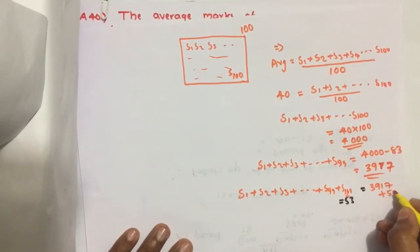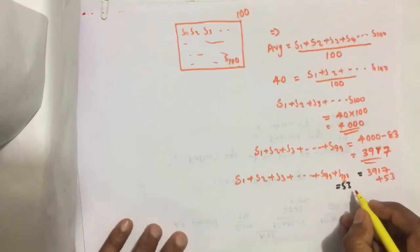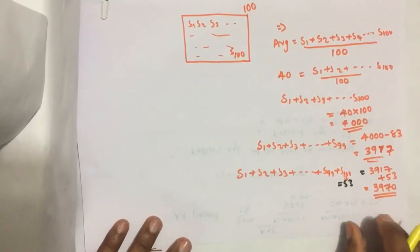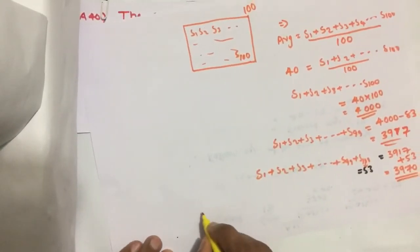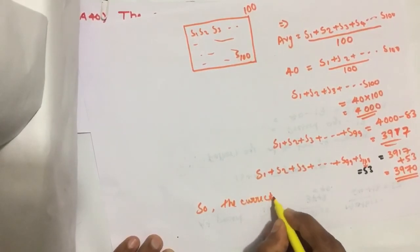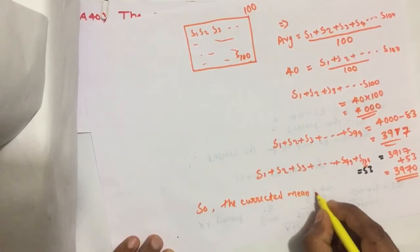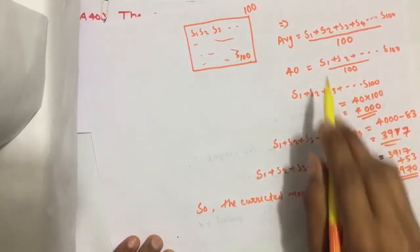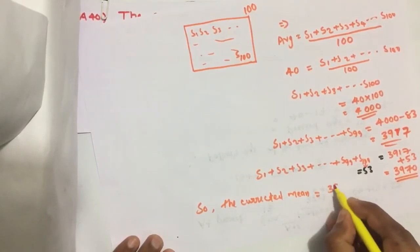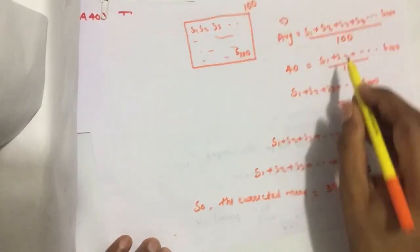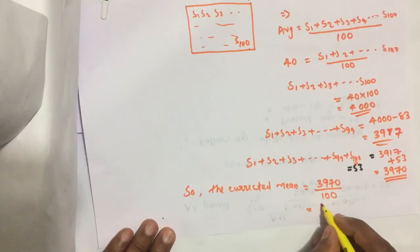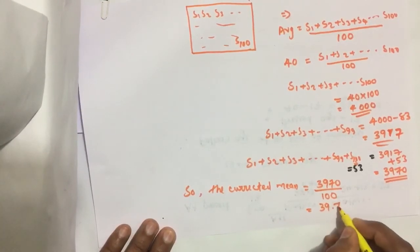3917 plus 53, which we get 3970. So the corrected mean or average: how we find average? Sum of all students' marks, which is equal to the corrected total marks, equal to 3970, divided by total number of students, that is 100, which we get 39.7 marks.